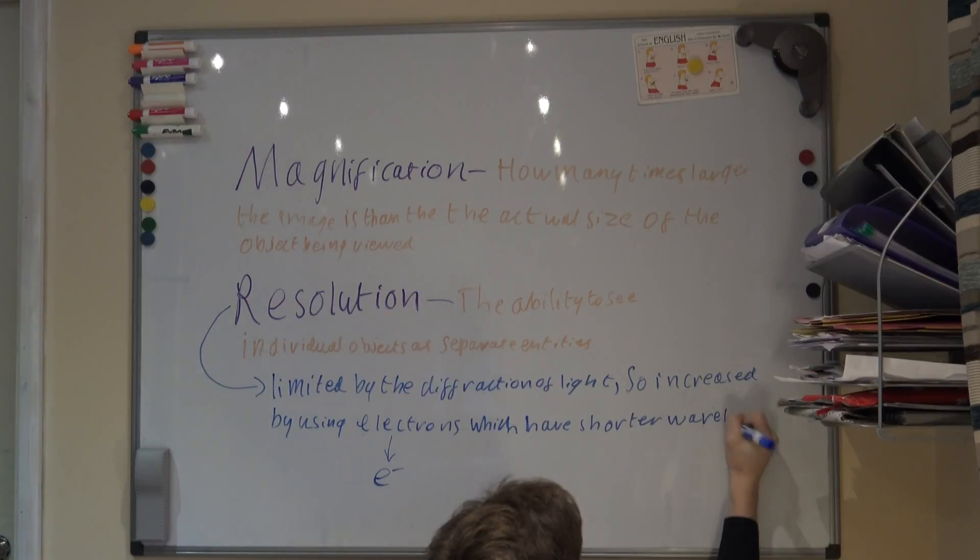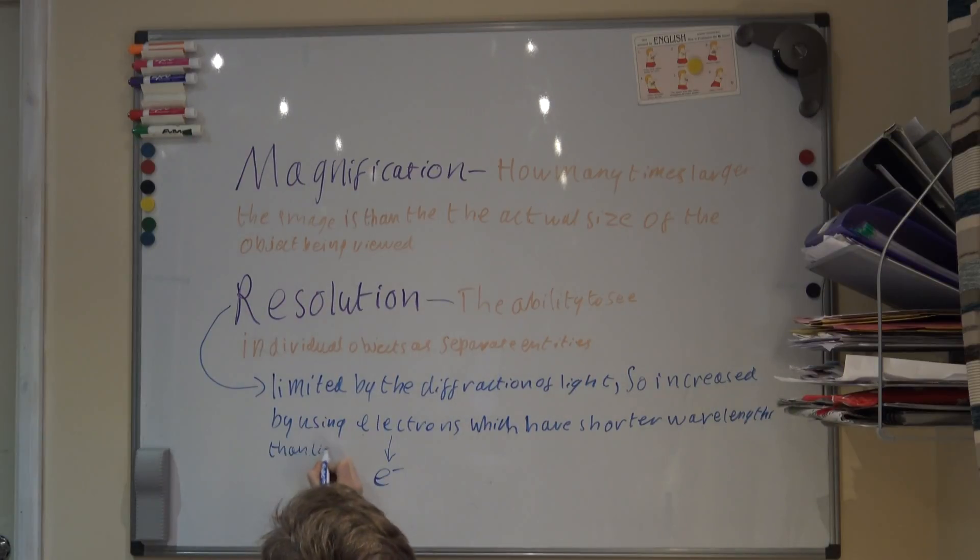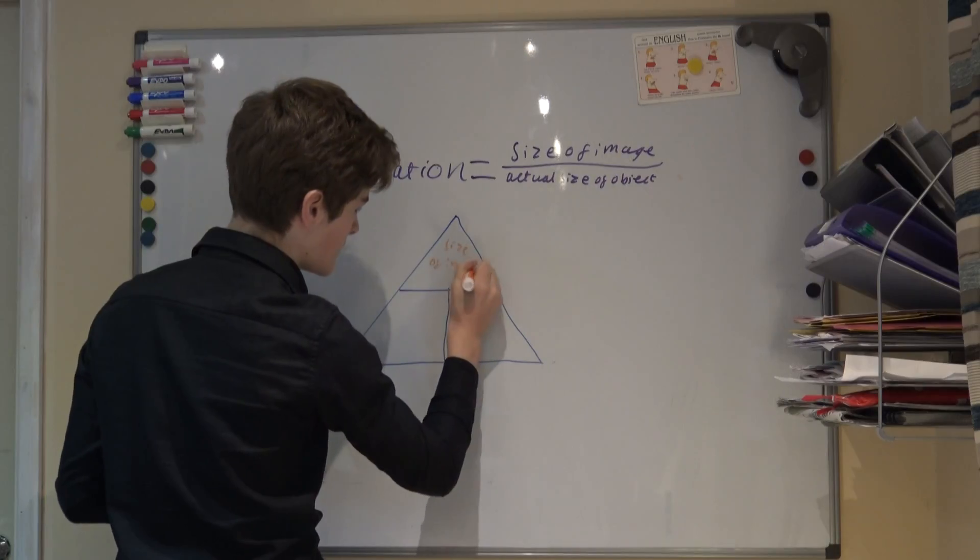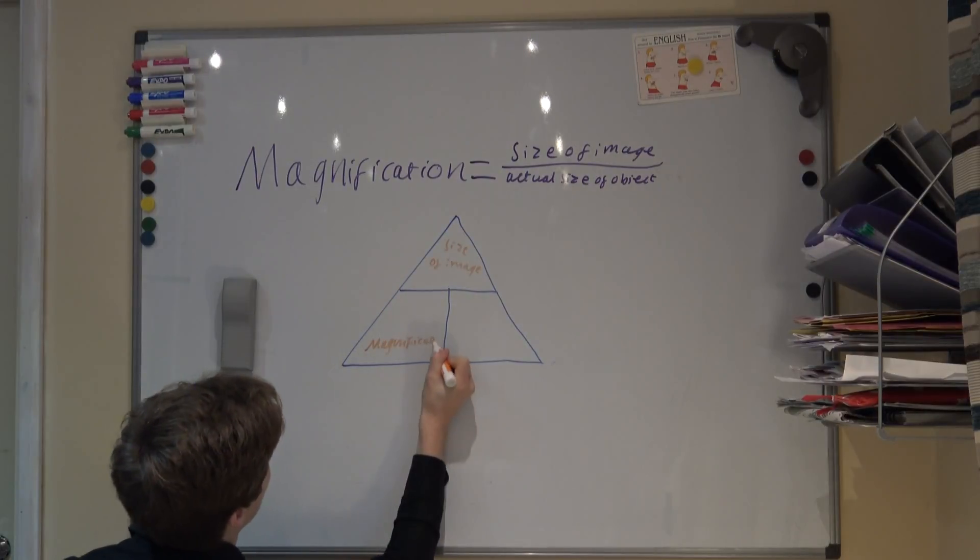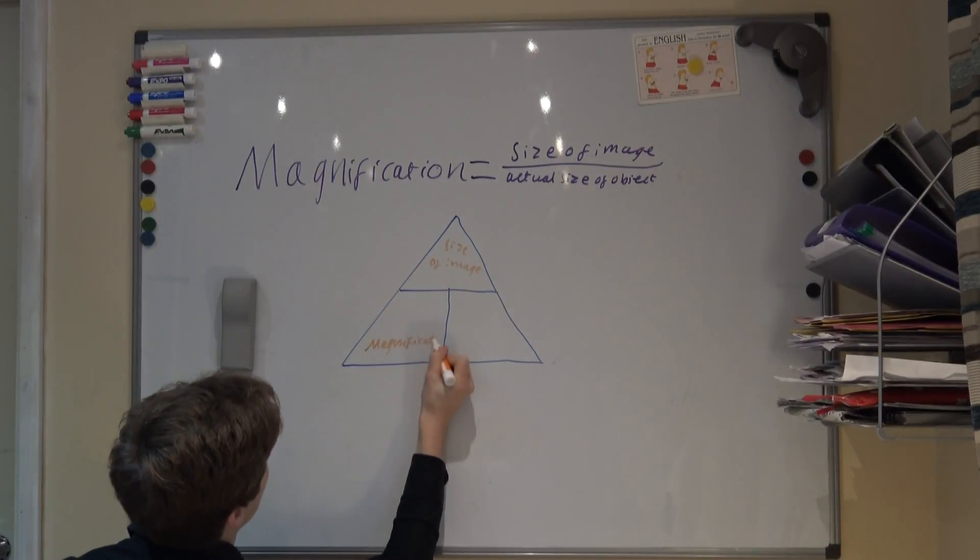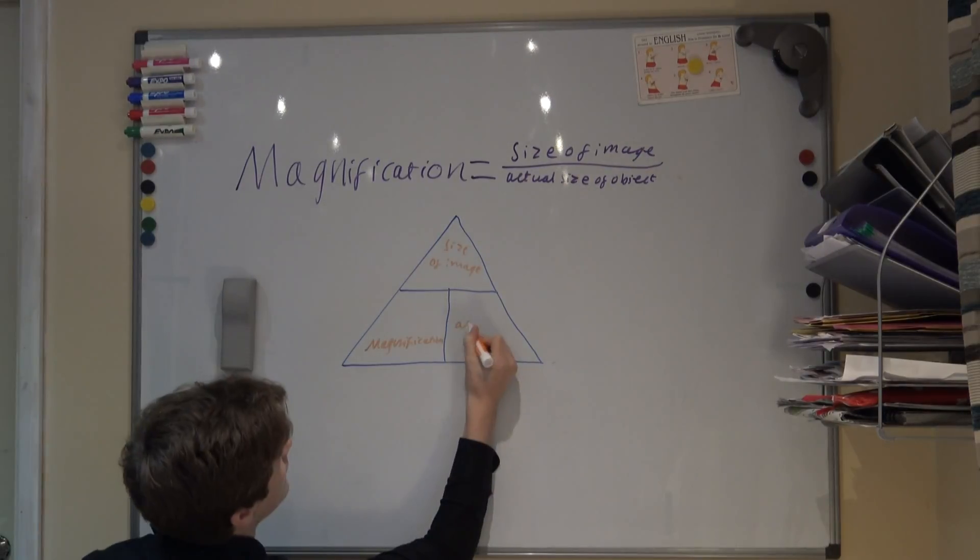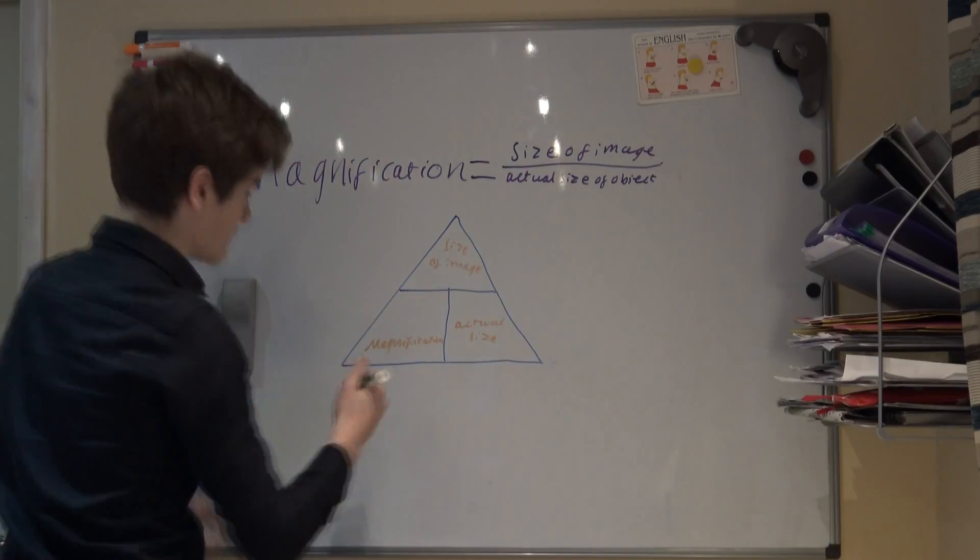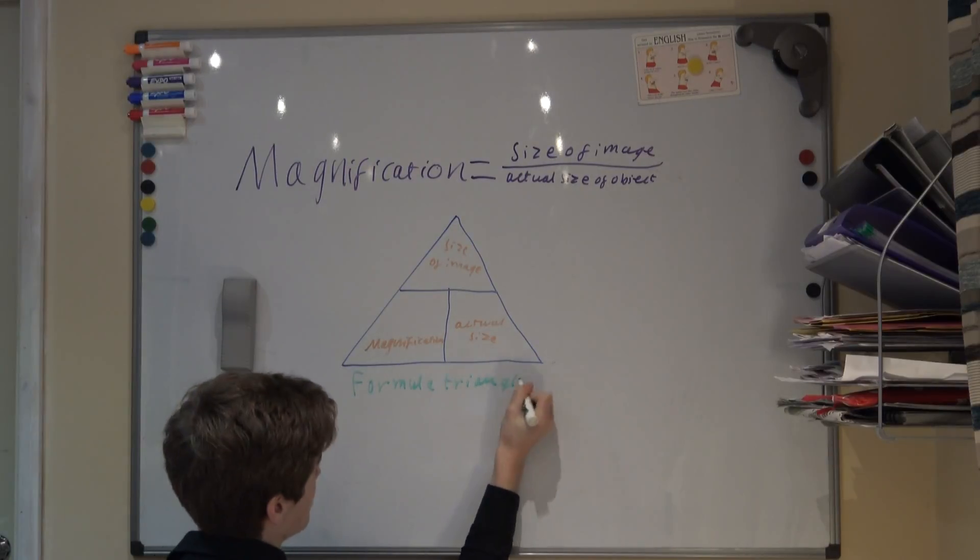Before I expand on that, there is one other thing I would like to outline on magnification. Often in an exam, you will need to find the magnification that is being used, but only have image size and the actual size of the object. To do this, you use the equation: magnification equals size of image over the actual size of object.